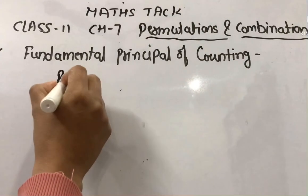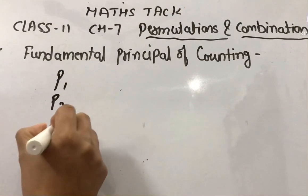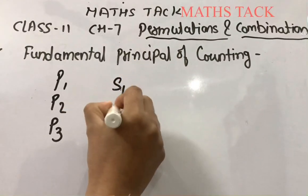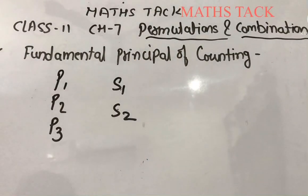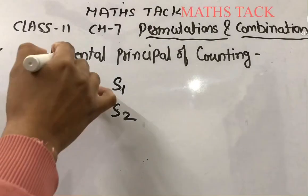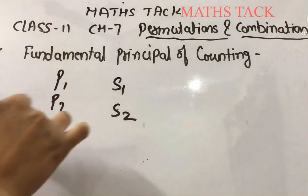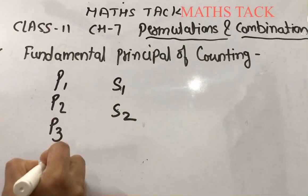P1, P2, P3, and two shirts S1 and S2. How many different pairs of a pant and shirt can he dress up with? There are three ways a pant can be chosen and two ways a shirt can be chosen. So how many ways